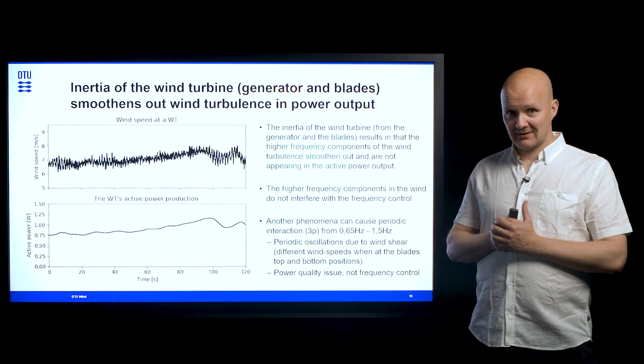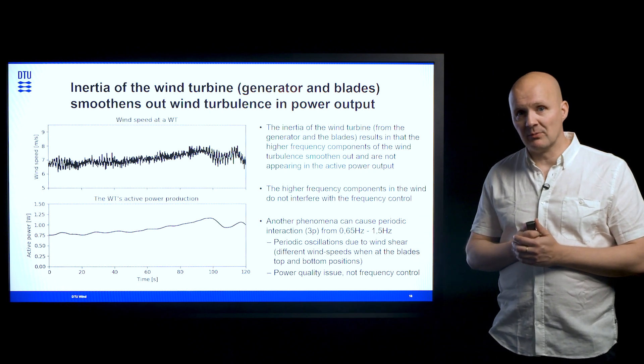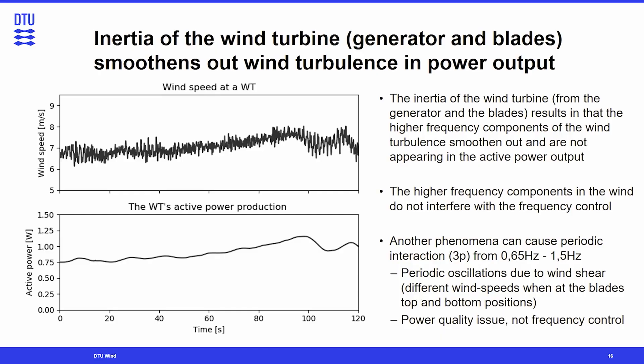Starting with the inertia of the wind turbines and its role in smoothing out wind turbulence: because the generator and the blades have significant inertia, the rotational speed of the generator and hence the blades won't change instantaneously. This contributes to the highest frequency components in the wind being smoothed out when we examine the active power output from the wind turbine.